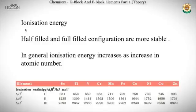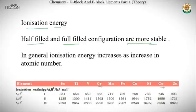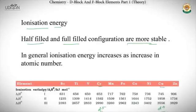For ionization energy, half-filled (d⁵) and fully filled (d¹⁰) configurations are more stable, which is why Cr and Cu adopt those configurations. Since the atoms are smaller in size, ionization energies are fairly high — values mostly lie between those of p and s block elements, indicating transition metals are less electropositive than s block elements. Ionization energy increases from left to right in a series, and the values for the 5d series are higher than for 4d and 3d.